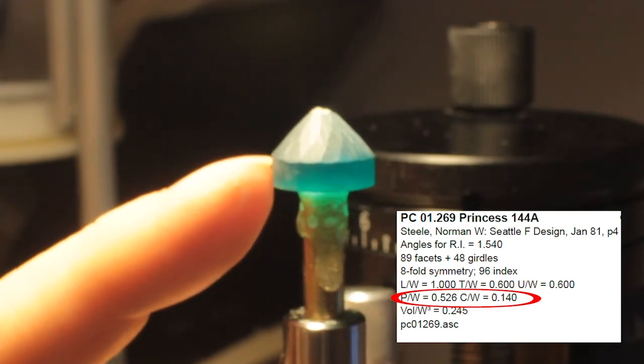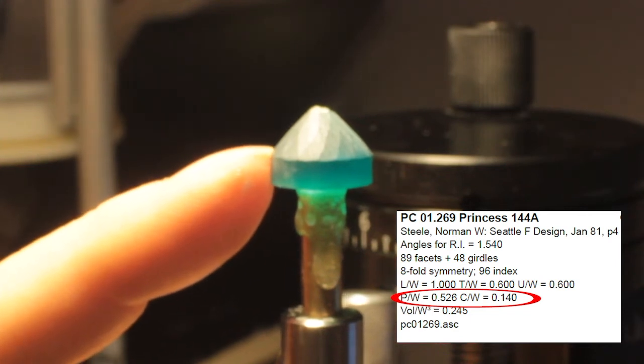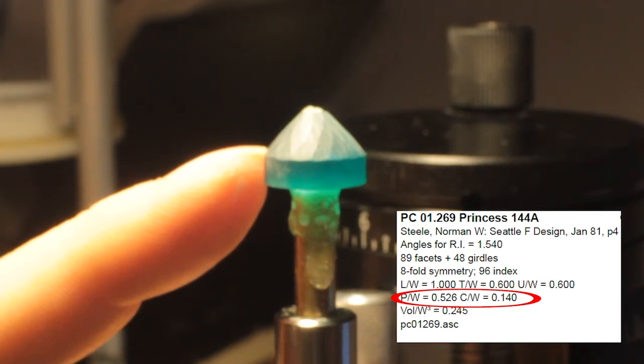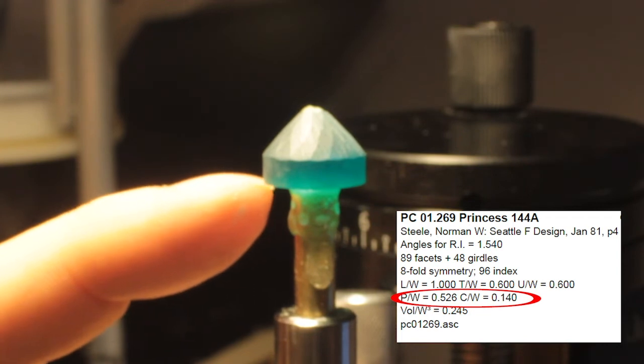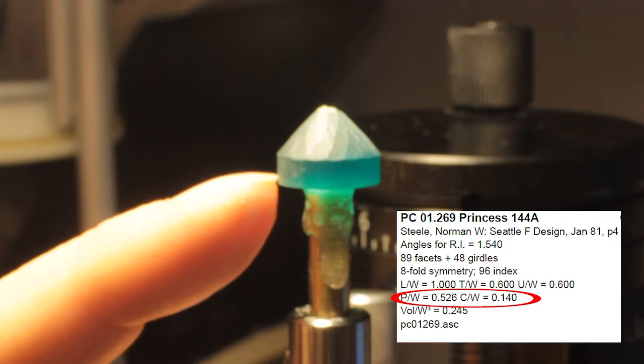And that's how many millimeters you need for the pavilion. For the crown, it's 0.14 times the width of the stone, 15.3, which equals 2.14.